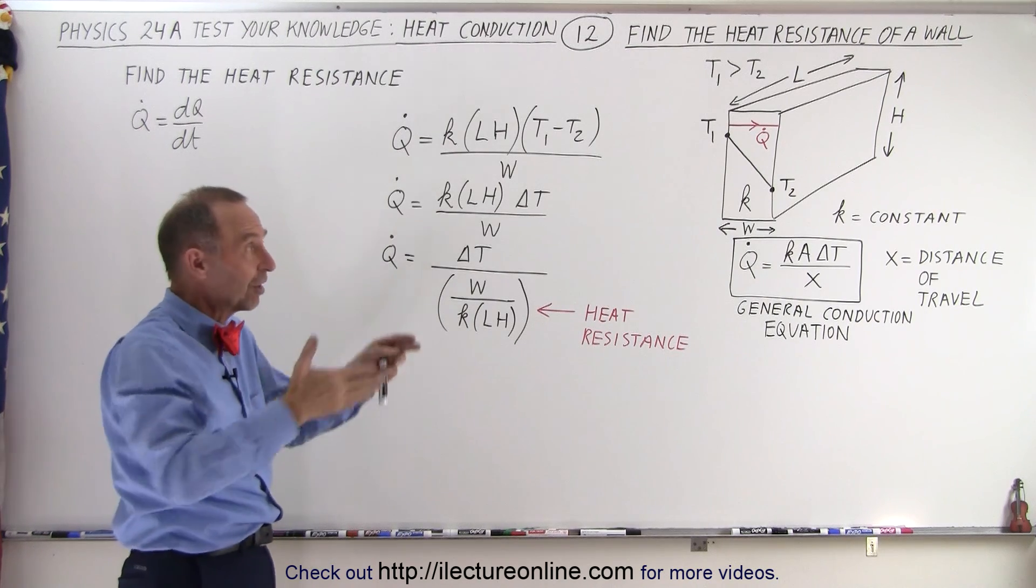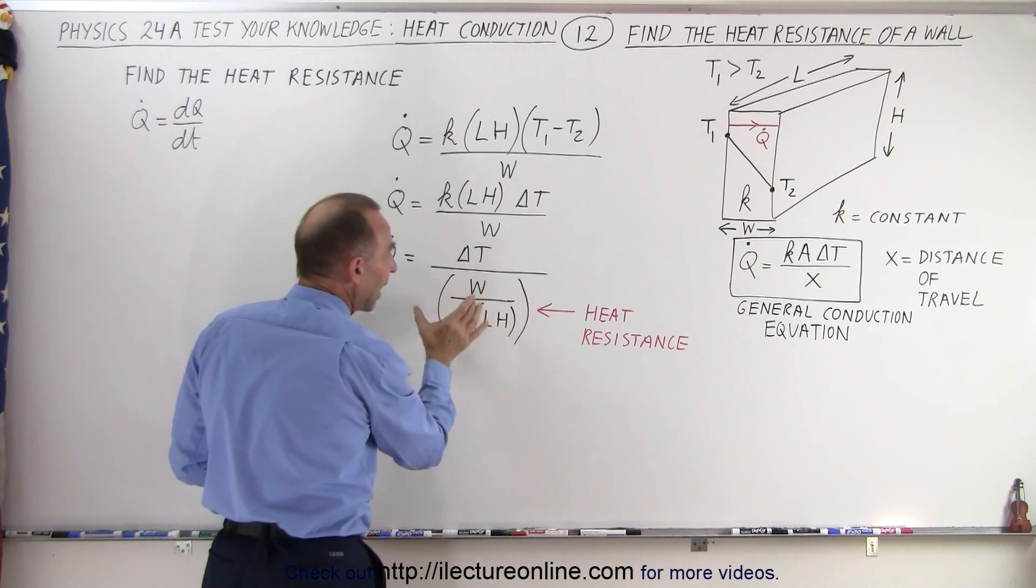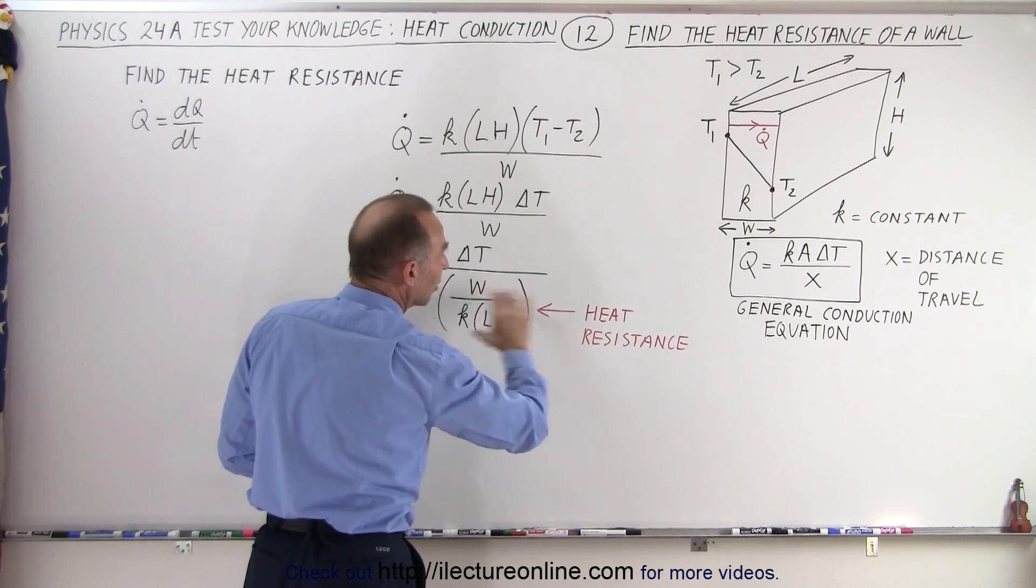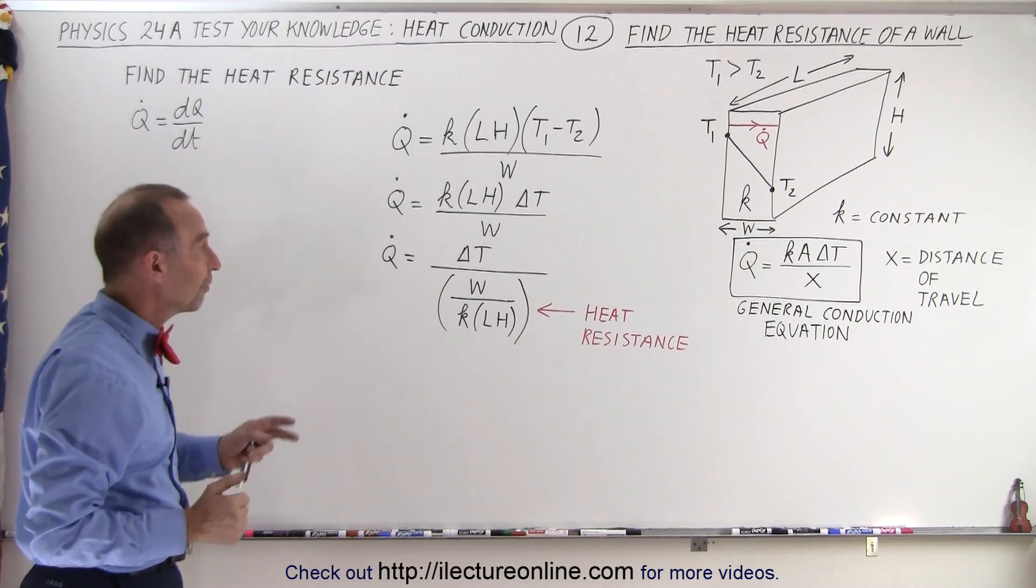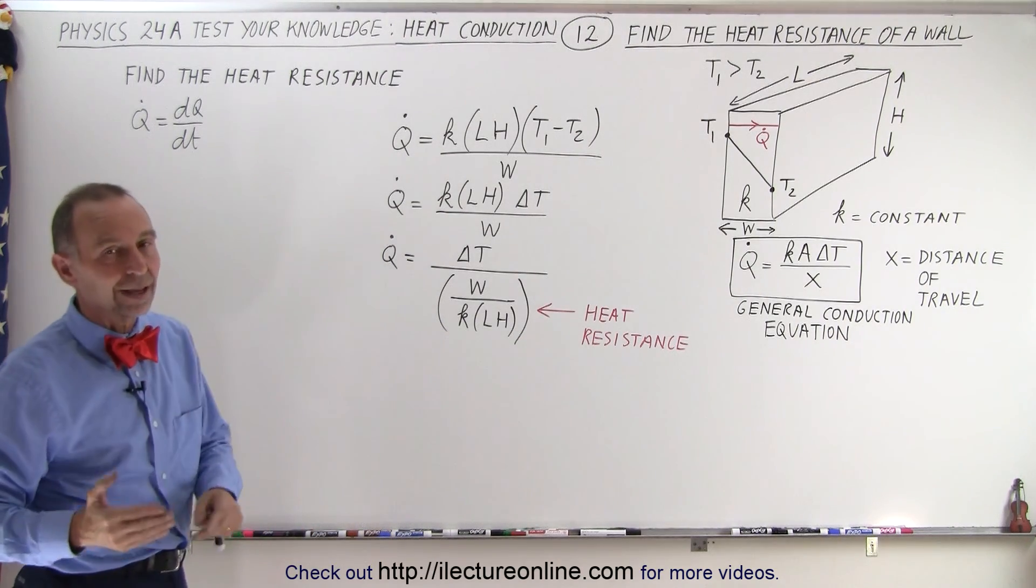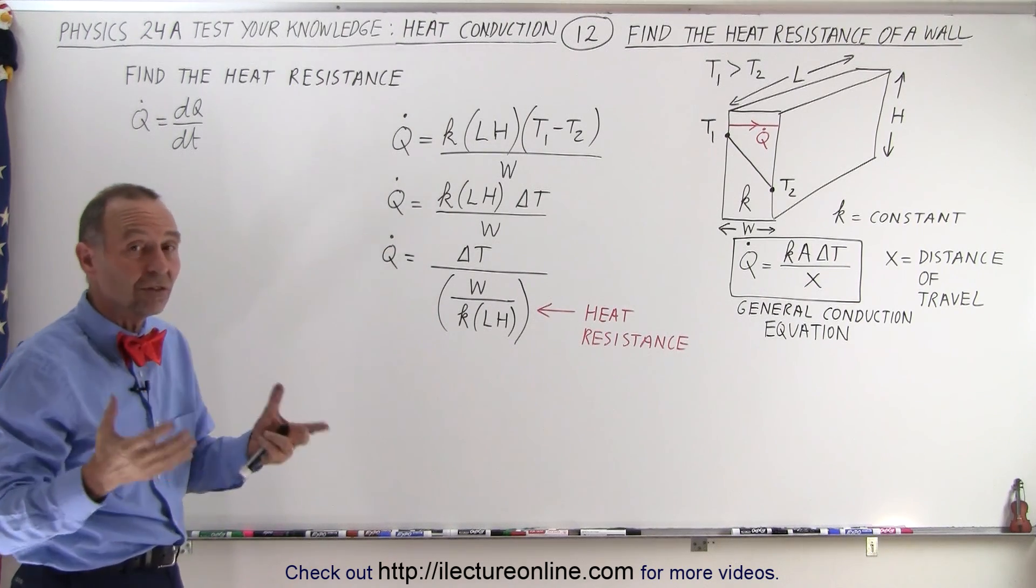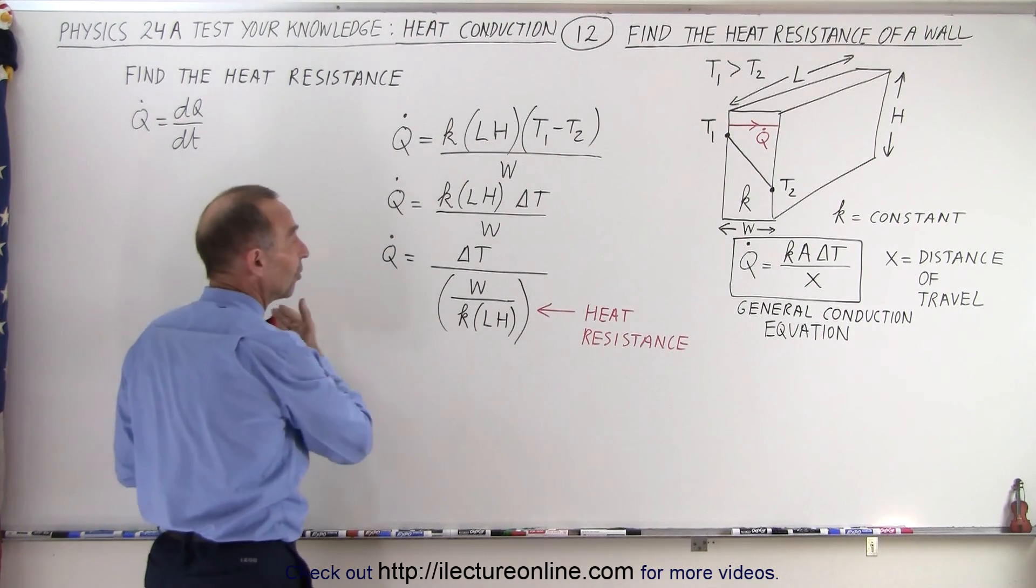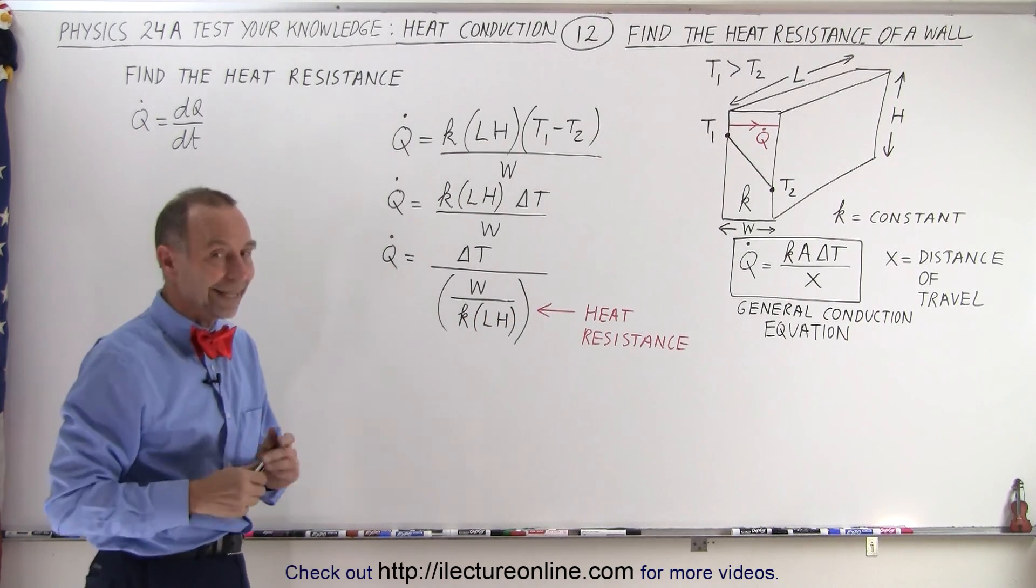If there's multiple layers, let's say there's an insulation layer, an outside wall, an inside wall. So what we have is the heat resistances added up in the denominator written underneath the total temperature difference between the left side and the right side, even if there's multiple layers. And that's why the concept of heat resistance is so important. It allows us to calculate an equation for multiple layers, which we're going to do in the next video.